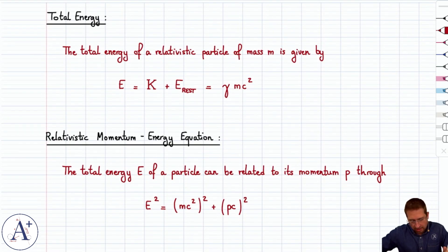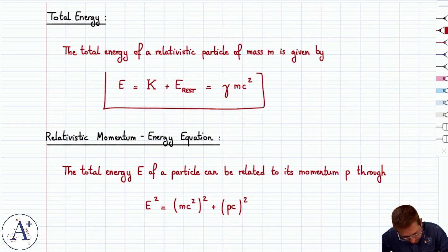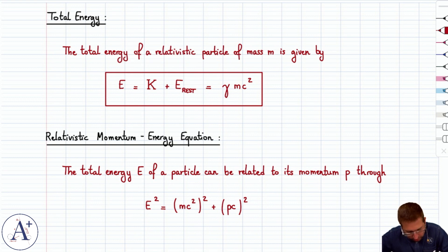So the total energy of a relativistic particle of mass m is E equals k plus E rest. That's gamma minus 1 mc squared plus mc squared, and therefore you get gamma times mc squared.